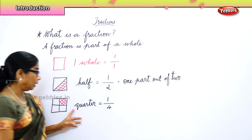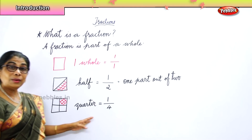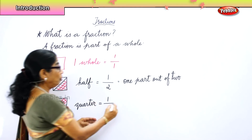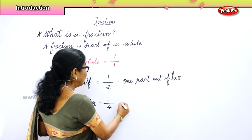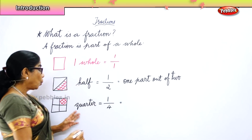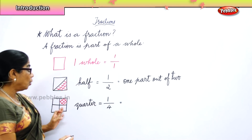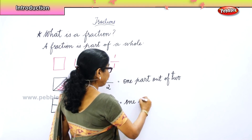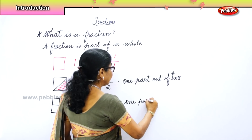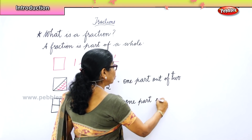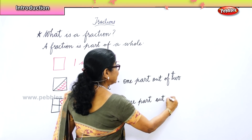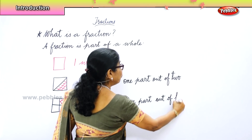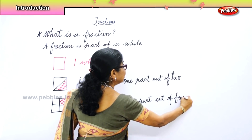How do we write it in words? We say one part out of four. One part out of four, because we cut it into four parts. Out of four, that is quarter.